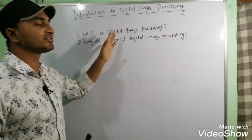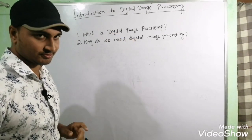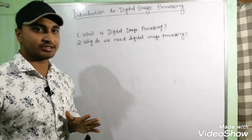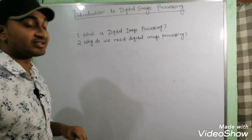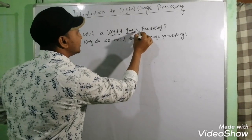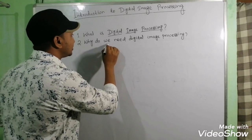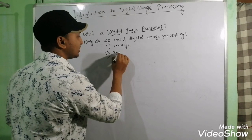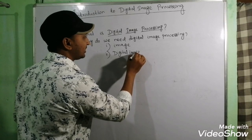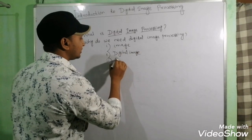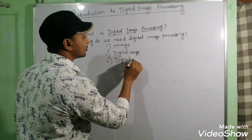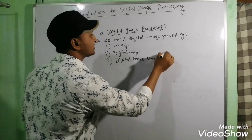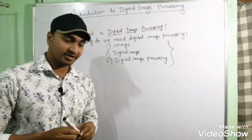First thing is: what is Digital Image Processing? That means regarding its definitions. Before going to the details of Digital Image Processing, we first need to understand the basic three terminologies. First, what is an image? Then, what is a Digital Image? And the third thing is, what is Digital Image Processing? We need to understand these three things first, then we will go in depth.